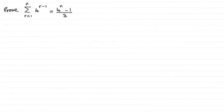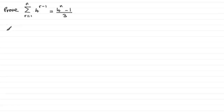Here's another example in my series on proof by mathematical induction, where we've got to prove that the sum of the series 4 to the power r minus 1, r going from 1 to n, is equal to 4 to the power n minus 1, all divided by 3. So in the usual way, we test it to see if it's true when n equals 1. And once we've done this, we assume that it's true for n equals k, and go on to prove that it's true for n equals k plus 1, based on that assumption.